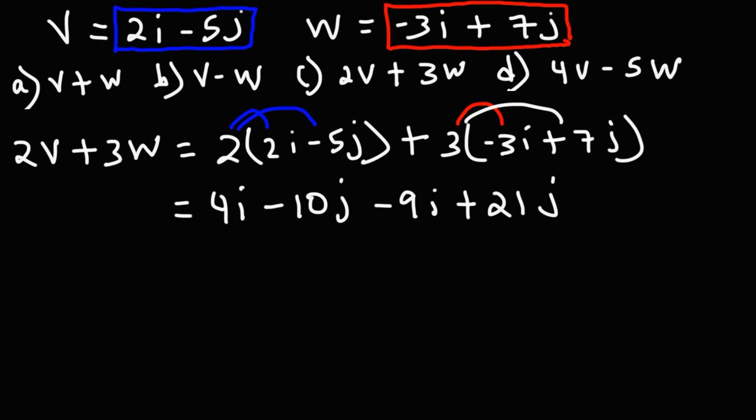Now let's combine like terms. 4i minus 9i is negative 5i, and negative 10j plus 21j is positive 11j. So our final answer for part c is negative 5i plus 11j.